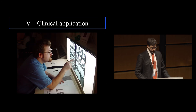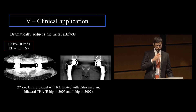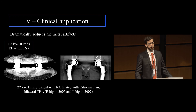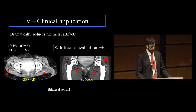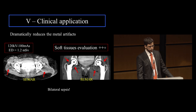The clinical applications are very interesting because this algorithm dramatically reduces metal artifacts. Applying the algorithm on the images of the 27-year-old patient with bilateral hip prosthesis, you can see a lot going on in the soft tissues around the prosthesis — joint effusion bilaterally, especially on the left side. This was confirmed as bilateral sepsis.